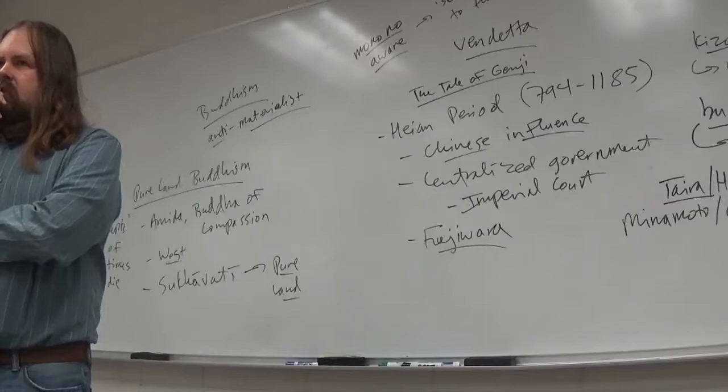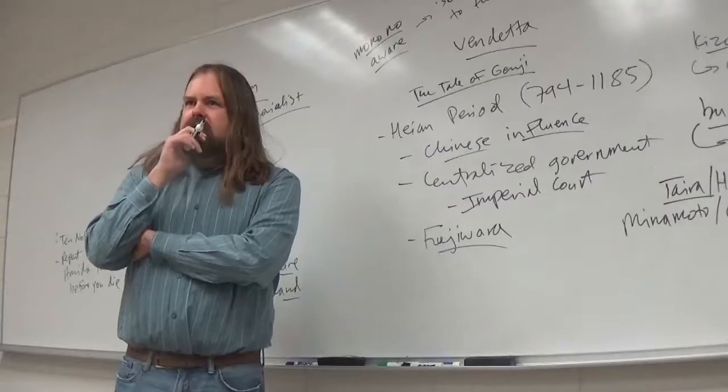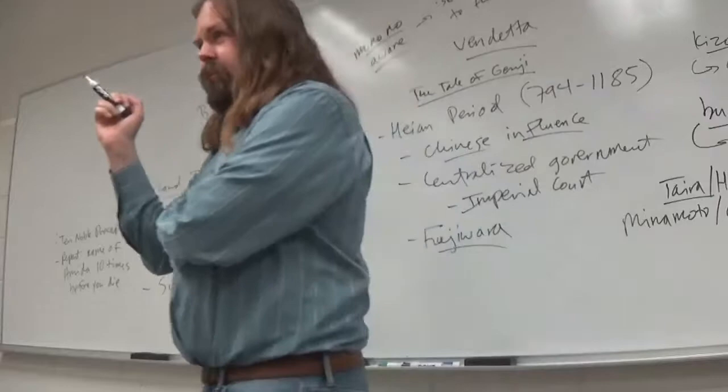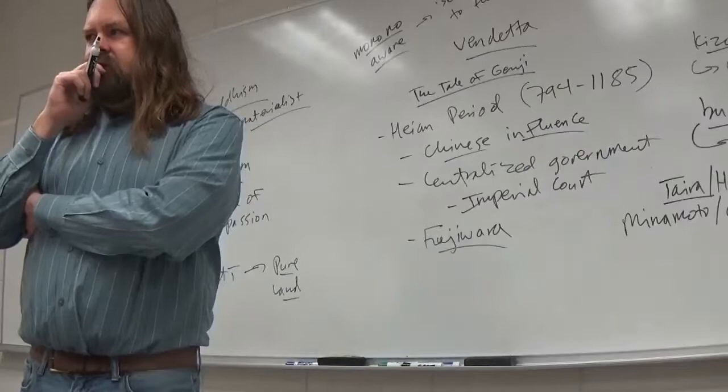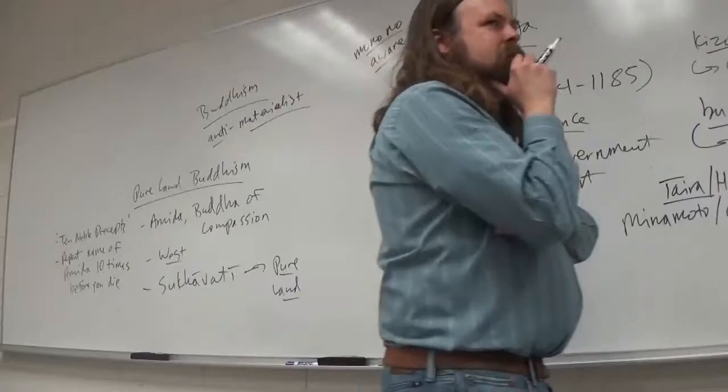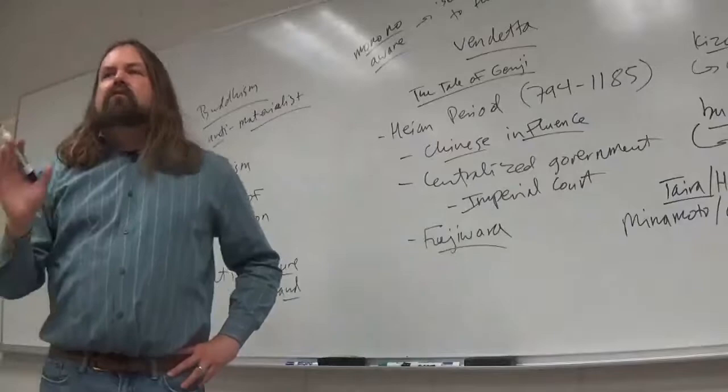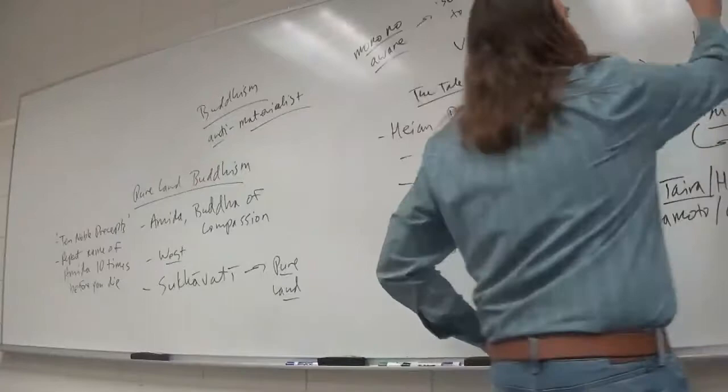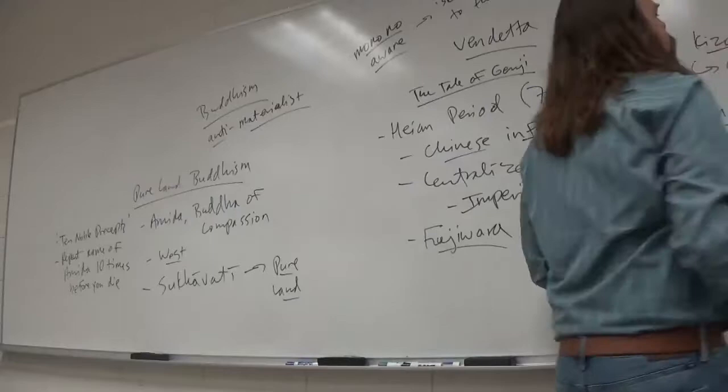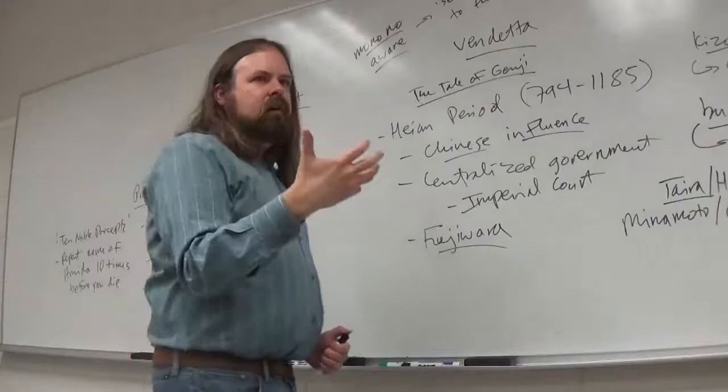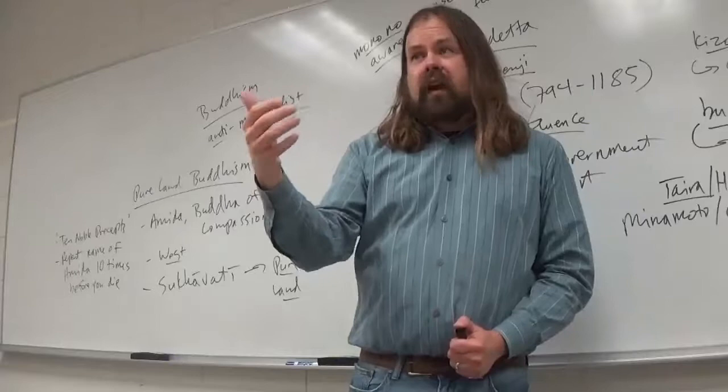Kiyomori was the oldest son and heir of Taira no Tadamori, the minister of punishments, and the grandson of Masamori, the governor of Sanuki. So he's the son and heir of a courtier, the minister of punishments, and he's also the grandson of a provincial governor. What does this indicate about his class status? He's kind of both. He's from a bushi family that has worked its way up into kizoku. Kiyomori is throughout the text portrayed as a rule breaker.